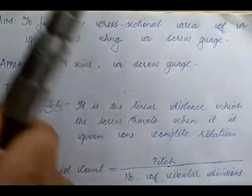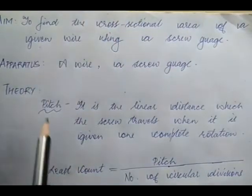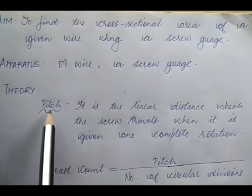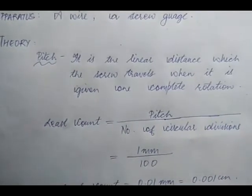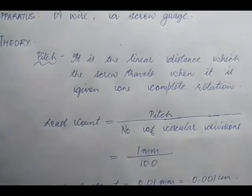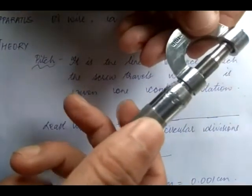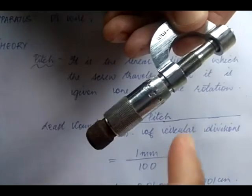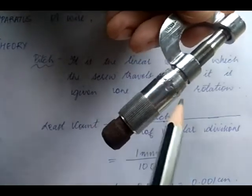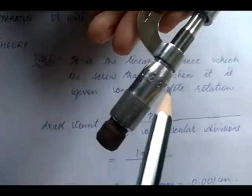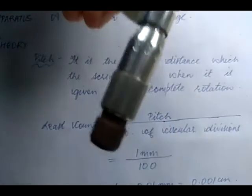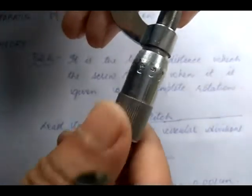Before finding the least count, we need to find something called the pitch, because the formula for least count is: pitch divided by the number of circular divisions. The screw gauge has markings graduated in a circle, and these graduations are called the circular scale of the screw gauge.